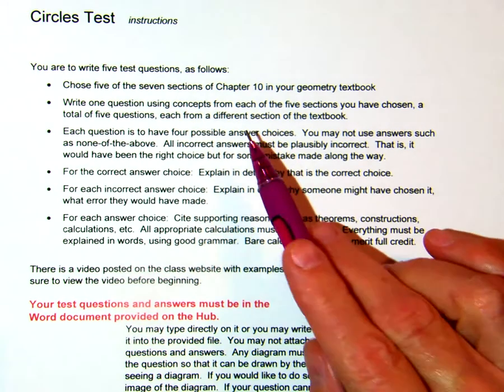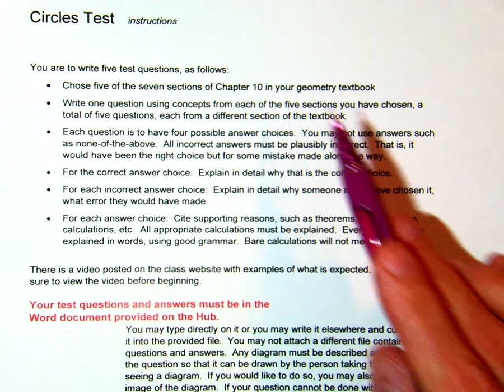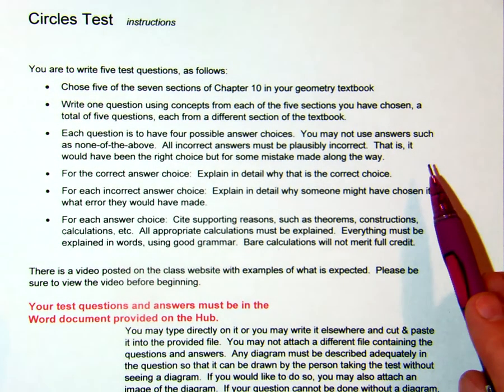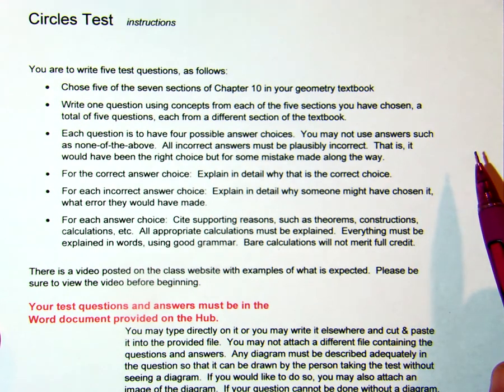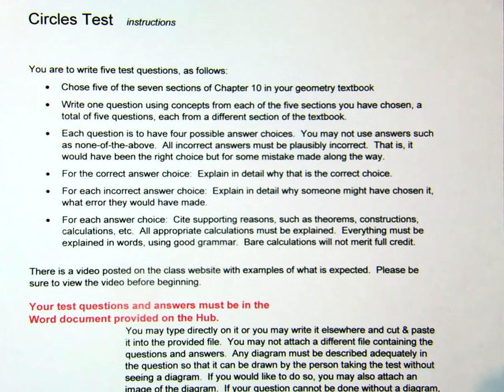You're going to write one question using the concepts from each of the five sections. That'll be five questions, each from a different section. Each question is to have four possible answer choices. You can't use none of the above, A and B but not C, none of that. Just four straight out answer possibilities. They all must be plausibly incorrect. That means if you were working through it and you made some error, you'd get that answer. So it's not just like, today I like the number 27, I think I'll put 27 for the answer choice. No. They all have to be plausible answer choices that someone would get if they did the problem a way that's predictably wrong.